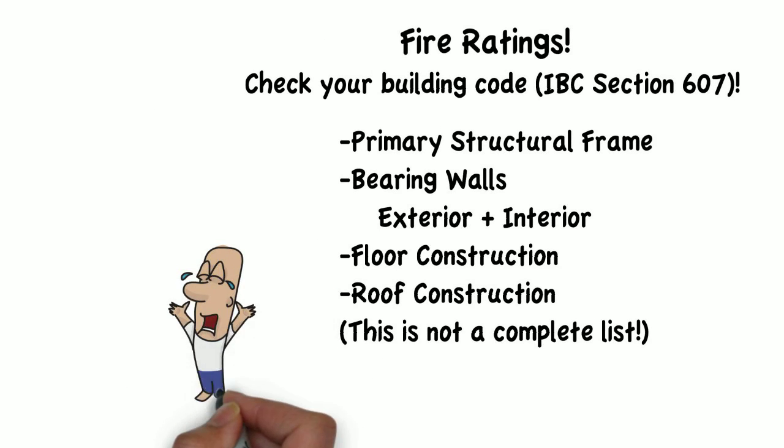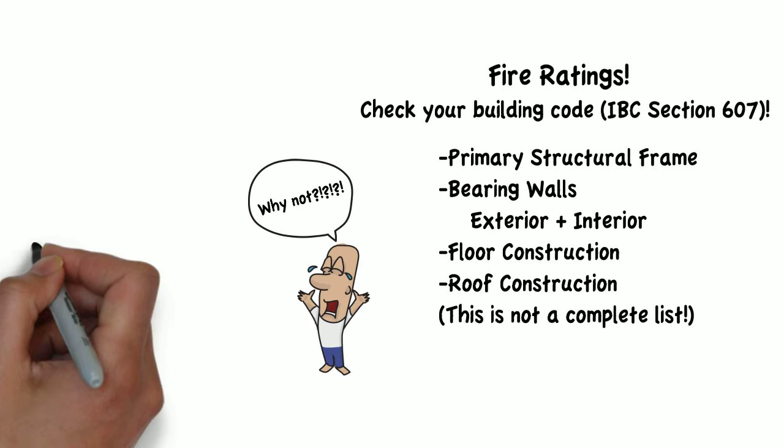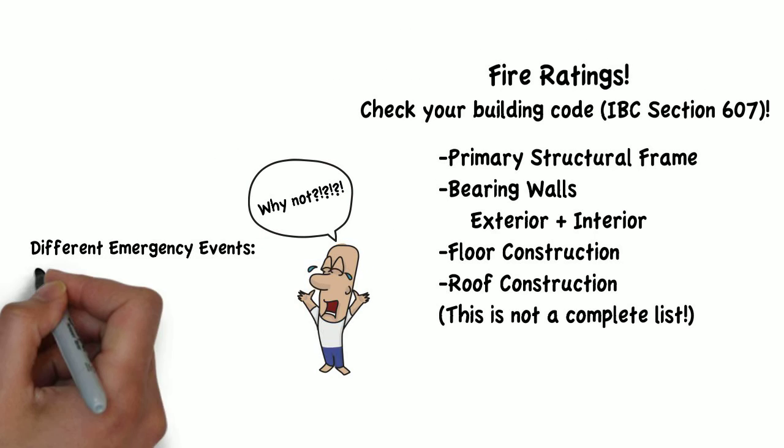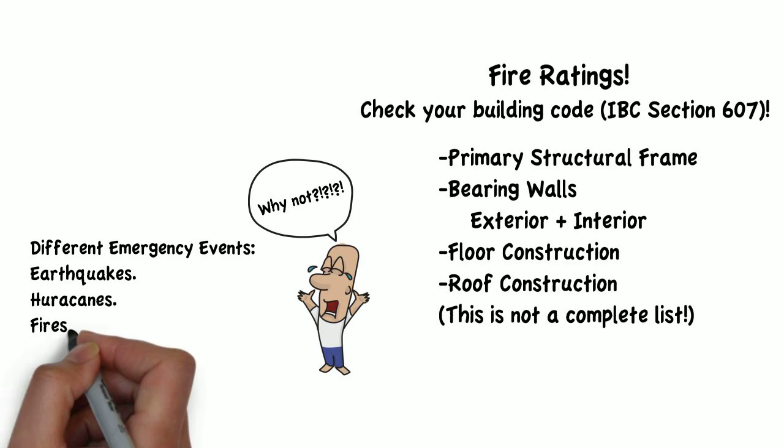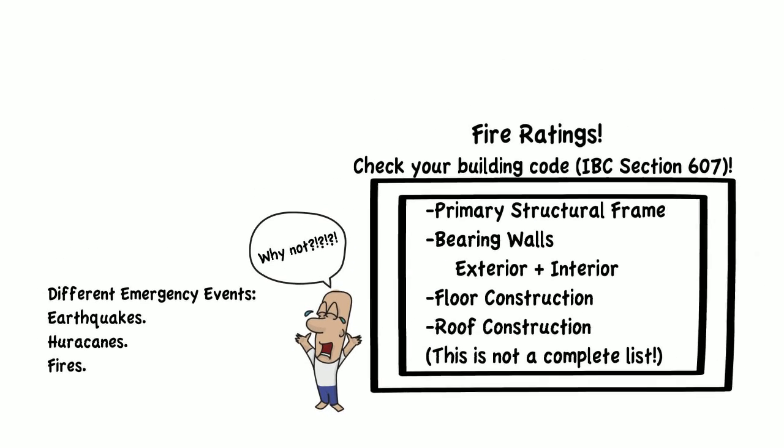It is impossible to make a building fireproof, not to mention there are other types of emergencies that may happen, such as earthquakes and hurricanes. But the building code reasonably gives priority to those systems.